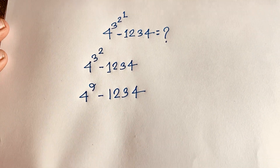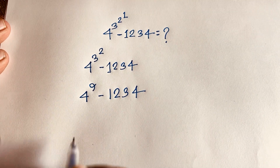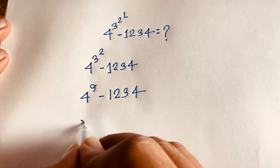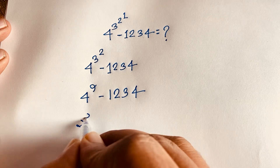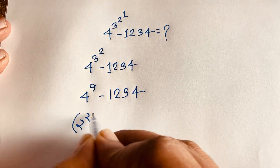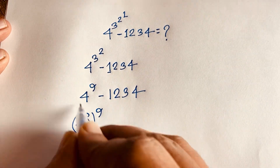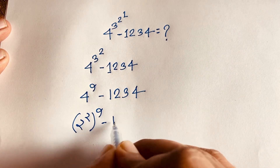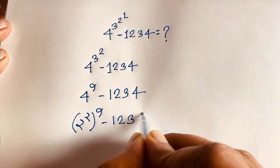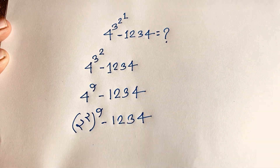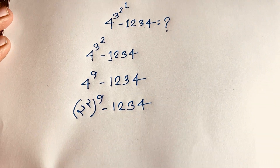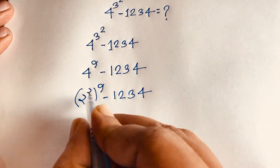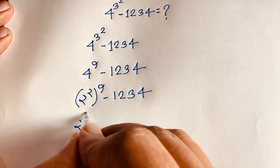Now you can see easily here is 4, so if I evaluate it, 4 equals 2 to the power 2, so we get 2 to the power 2, whole to the power 9. That gives 2 to the power 2 times 9, which equals 2 to the power 18, minus 1234.